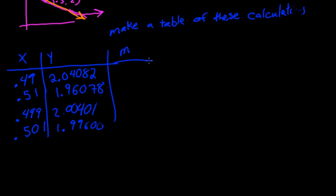And then if we calculated the slope as we did before at these points, we would get these numbers. Negative 4.081633. Negative 3.92157. Negative 4.00802. And negative 3.99202.